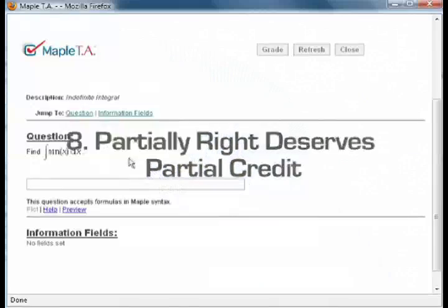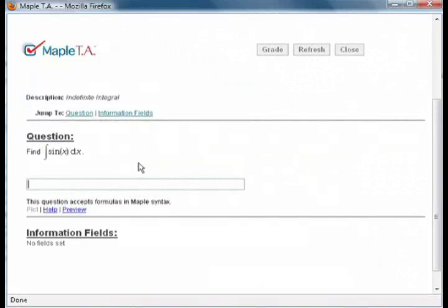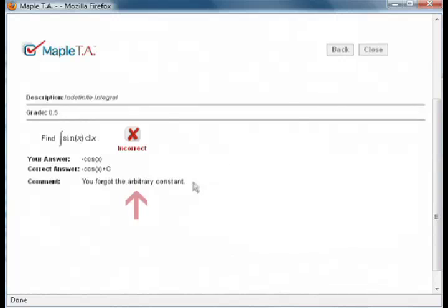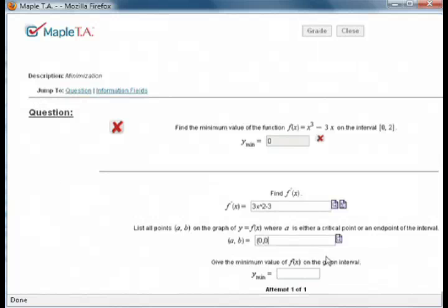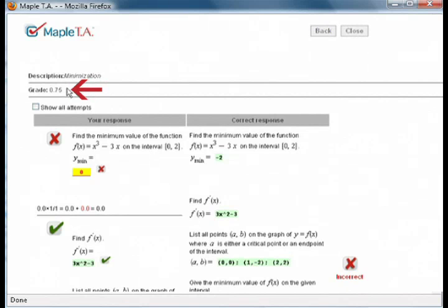Number 8. Partially right deserves partial credit. With Maple TA, you can give partial credit for mathematical responses that aren't completely correct, and you can control how generous or rigorous the grading will be. You can even give students a second chance on questions they get wrong, including giving them a simpler version of the question to complete for reduced credit.